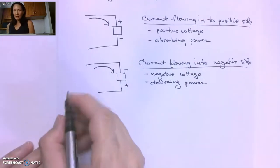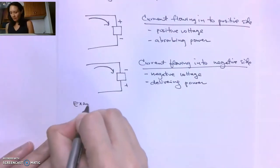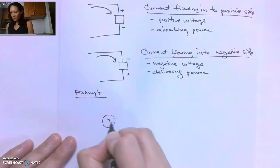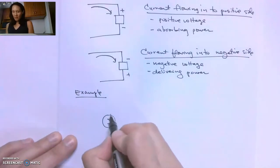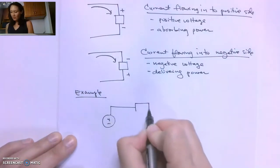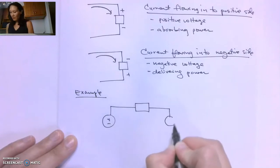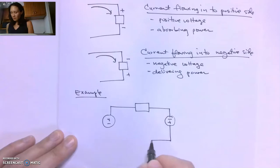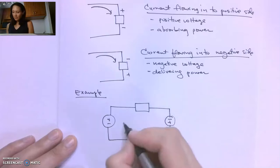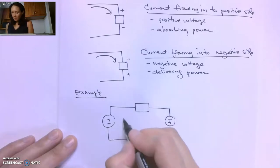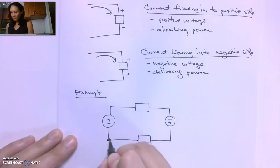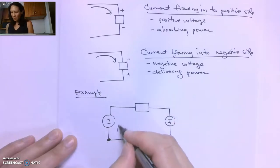So let me show you an example. Suppose we have a voltage source here, and we have a circuit element — maybe it is a resistor or capacitor. We have another voltage source and another circuit element. Let's say that we want to go around this loop, starting from here going in this direction.